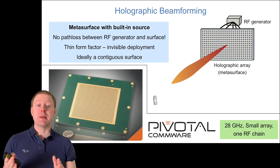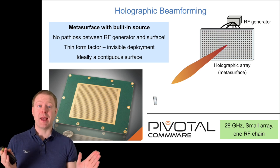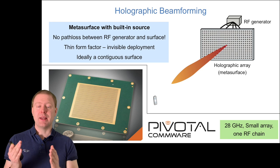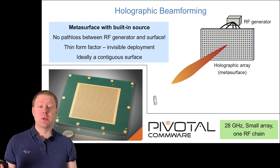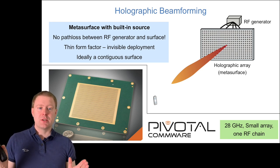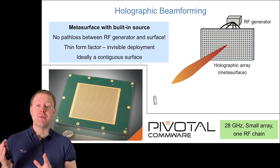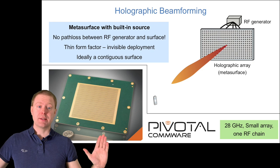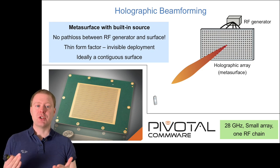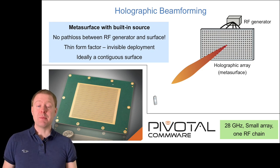This is essentially what the company Pivotal Comware is doing with holographic beamforming as a trademark. They have products for 5G systems operating at 28 gigahertz with only one RF chain and a very small array, but ideally in the future you can build much larger arrays with more than one RF chain to send multiple beams simultaneously.